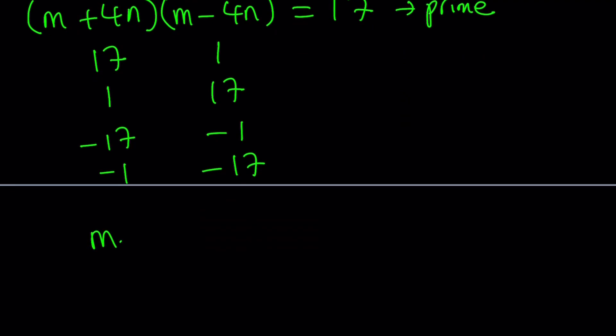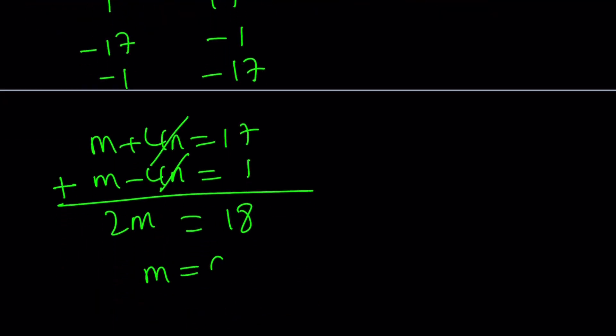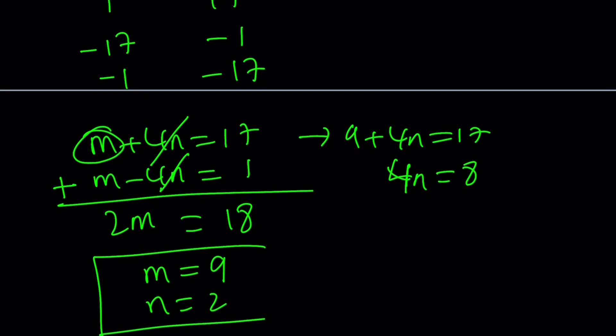First one says m plus 4n equals 17, and m minus 4n equals 1. So when we go ahead and add these two equations up, 4n cancels out, we get 2m equals 18, which implies m equals 9. Since m is equal to 9, we can go ahead and plug it in. 9 plus 4n is 17. That means 4n equals 8, or n equals 2. So in other words, 9 comma 2 is a solution.